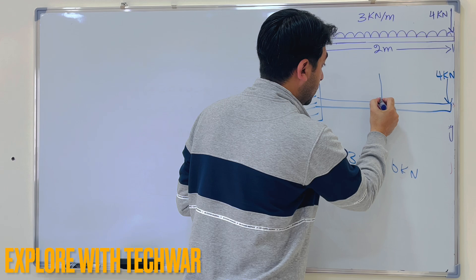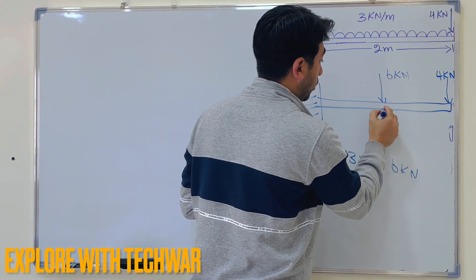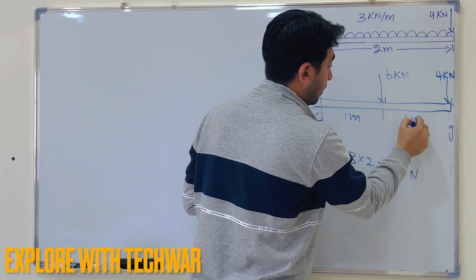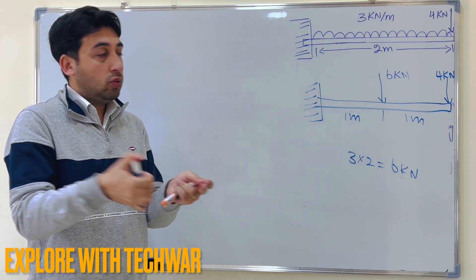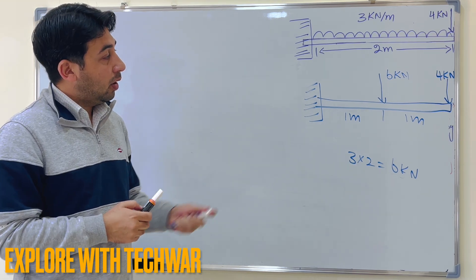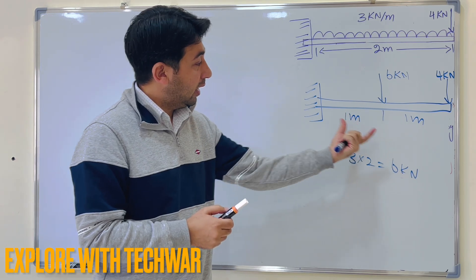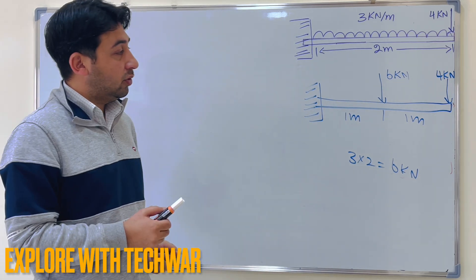So here is the center of the beam, we will have 6 kN another point load and we will say that this is 1 meter and this is 1 meter, because the total length is 2 meters, so we divide into half and half, so 1 meter and 1 meter. Now we have a simple cantilever beam, we have 2 point loads here, the 4 kN and 6 kN.